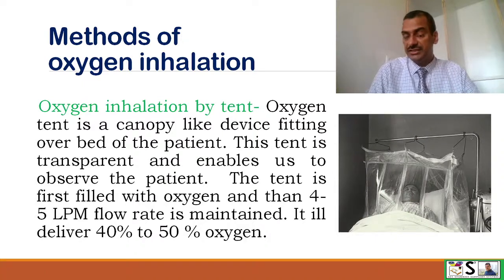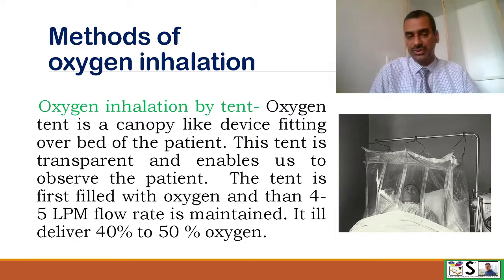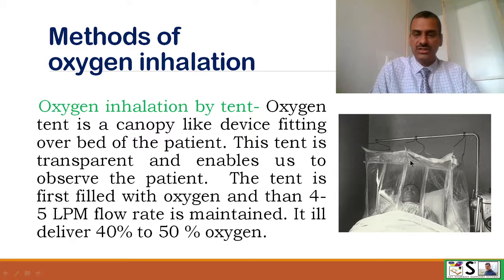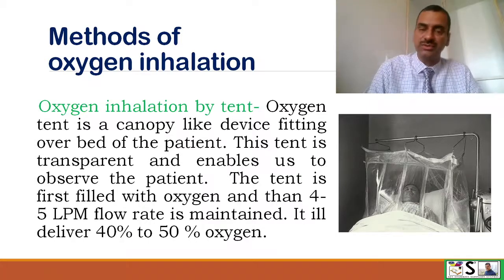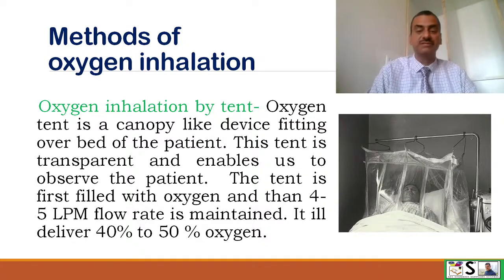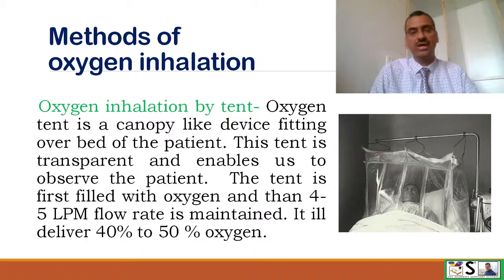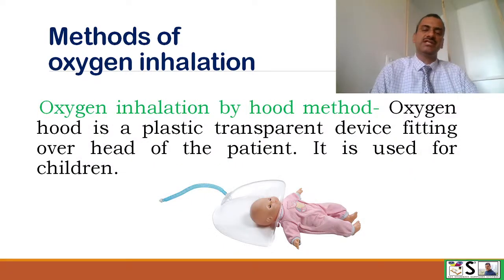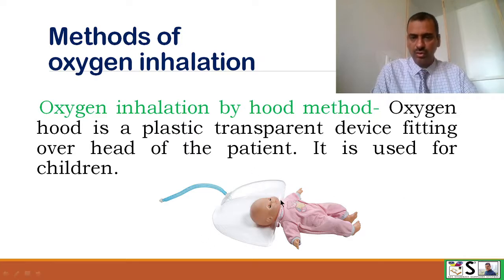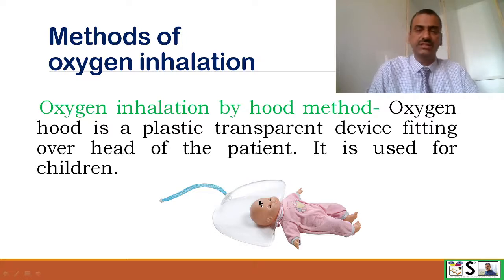Oxygen inhalation by tent is less commonly used but can be applied. The oxygen tent is like a canopy that fits over the bed and covers the patient. It is transparent so we can observe the patient during the process. The tent is first filled with oxygen and then a steady flow rate of 4 to 5 lpm is maintained, delivering 40 to 50 percent oxygen. There is also oxygen inhalation by the hood method, which is a plastic device placed on the head with a small hole for the oxygen pipe — normally used for children.